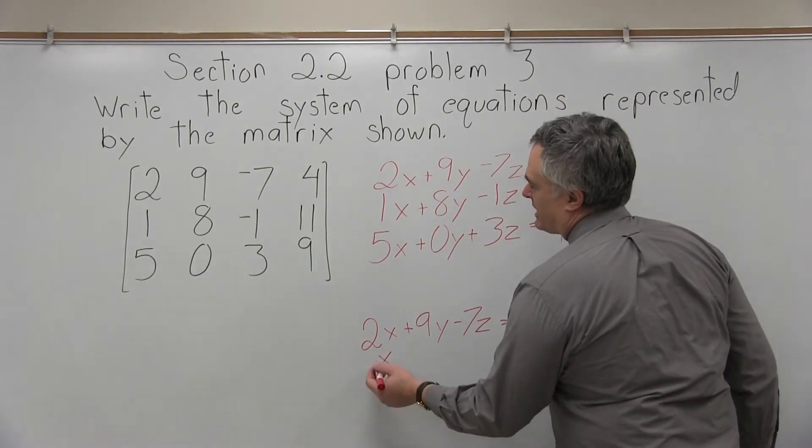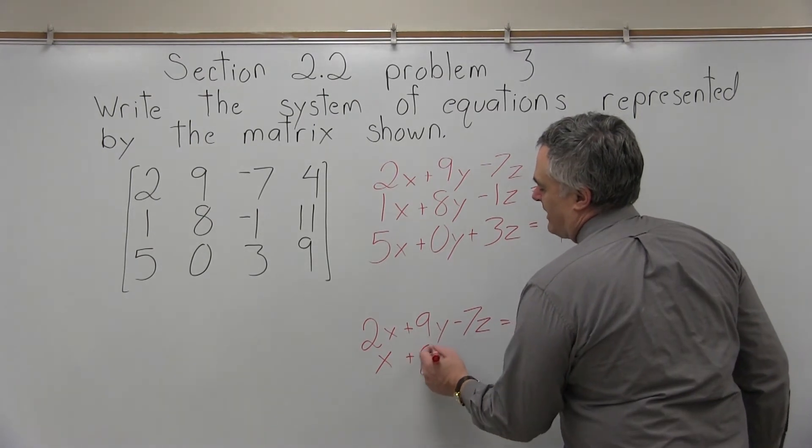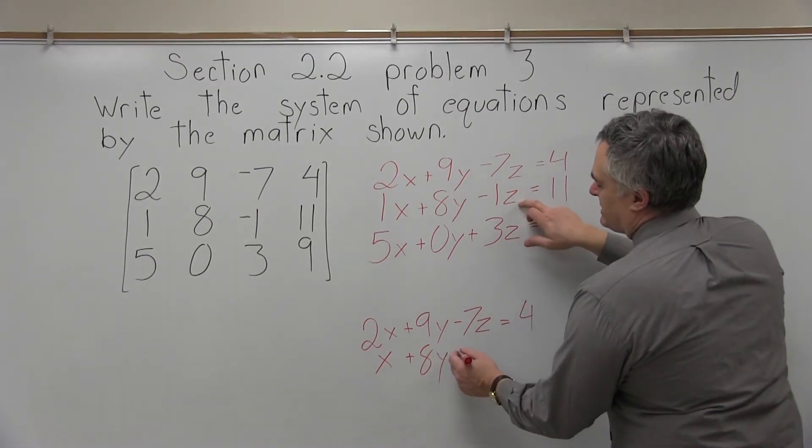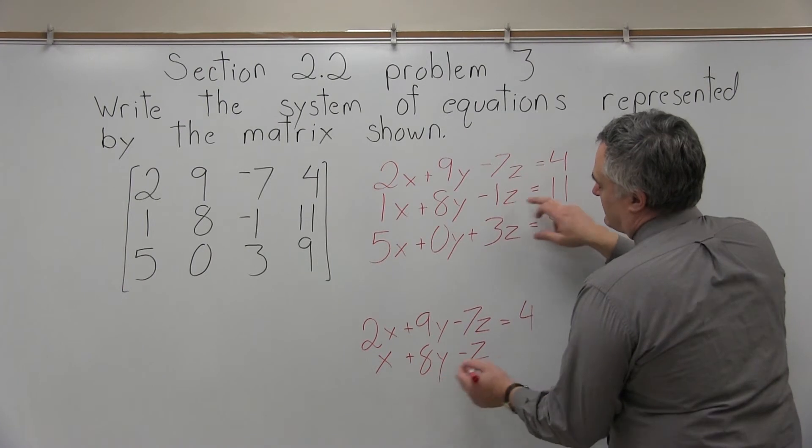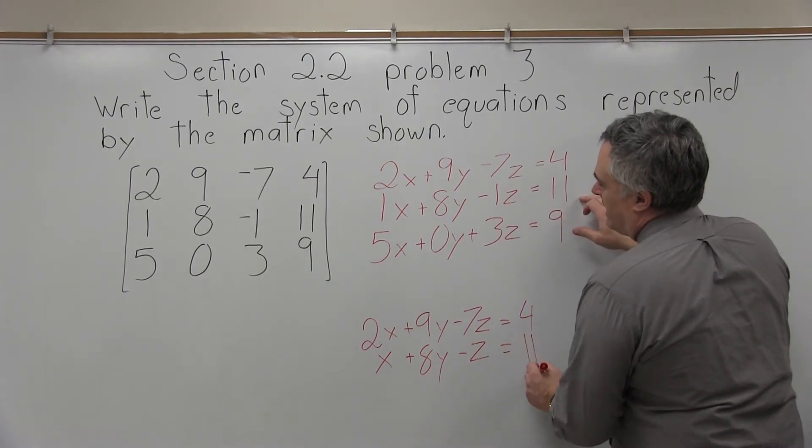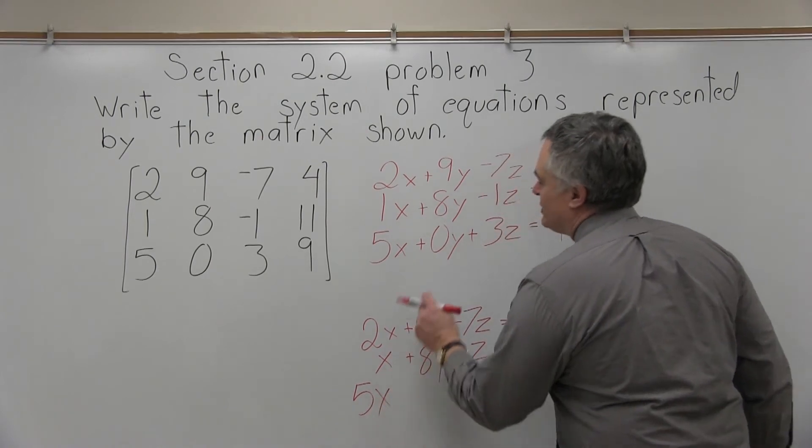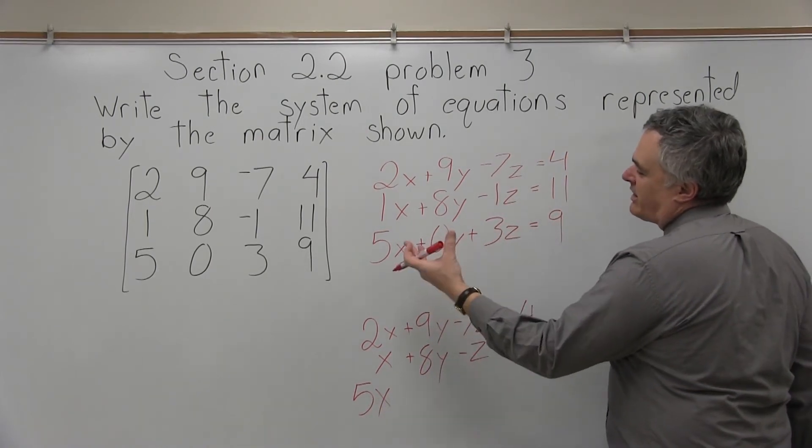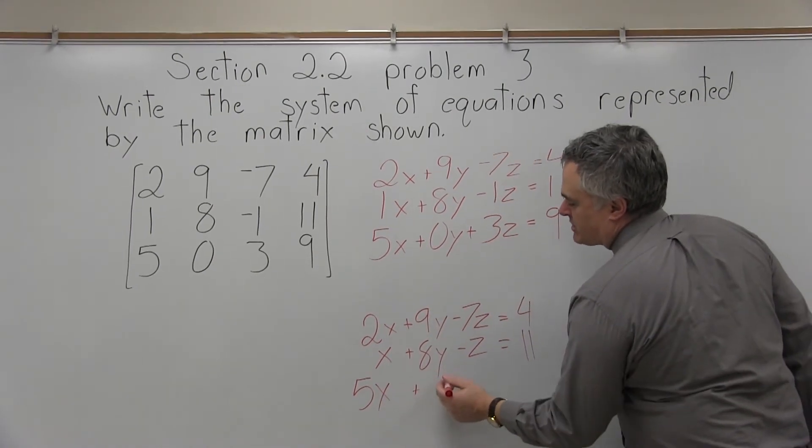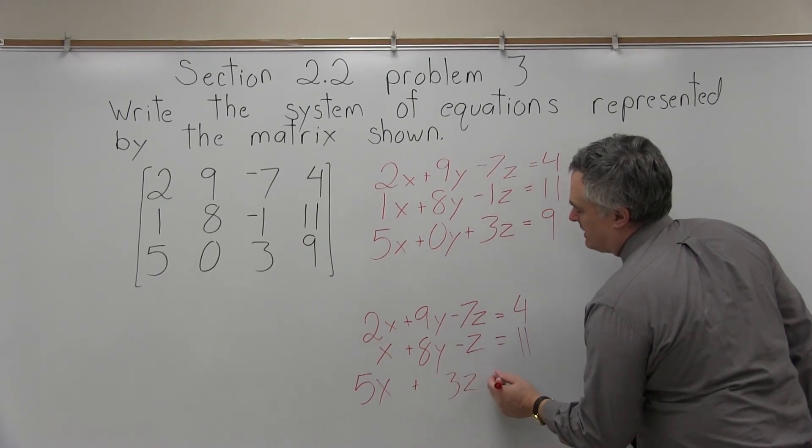Now that 1x, we probably just write it as x plus 8y, and the minus 1z, usually you just write minus z and then equals 11. And then the bottom row, 5x, and you just wouldn't even write the y—the 0y kind of let it disappear—plus 3z equals 9. That would be the more common way to write it.